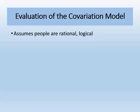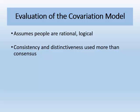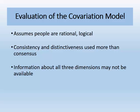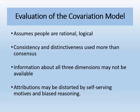In conclusion, the covariation model assumes that people make causal attributions in a rational, logical fashion. This is supported by several studies that generally confirm people do make attributions in the way these models predict. However, research also suggests that consensus information is not used as much as Kelly's model predicts. In addition, people do not always have the relevant information they need on all three dimensions. Lastly, people do not always behave in systematic and logical ways — attributions can be distorted by self-serving motives and by biases in reasoning.